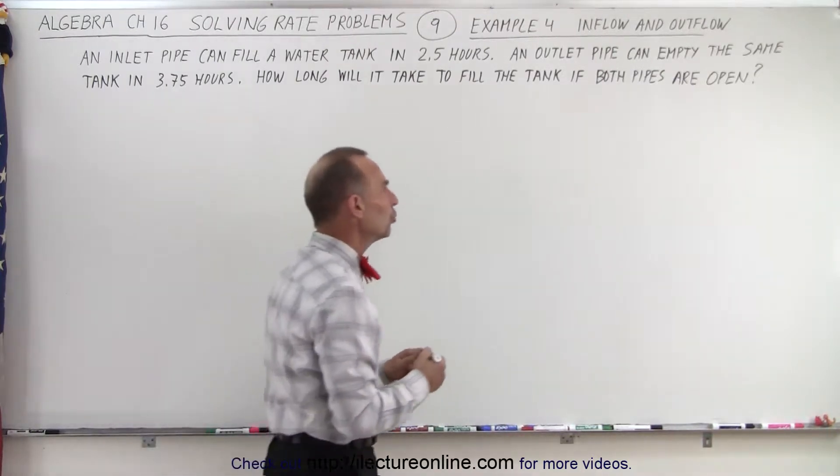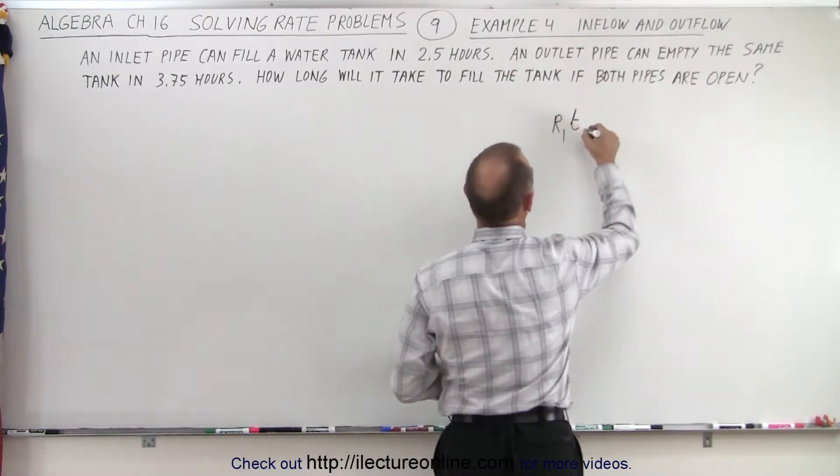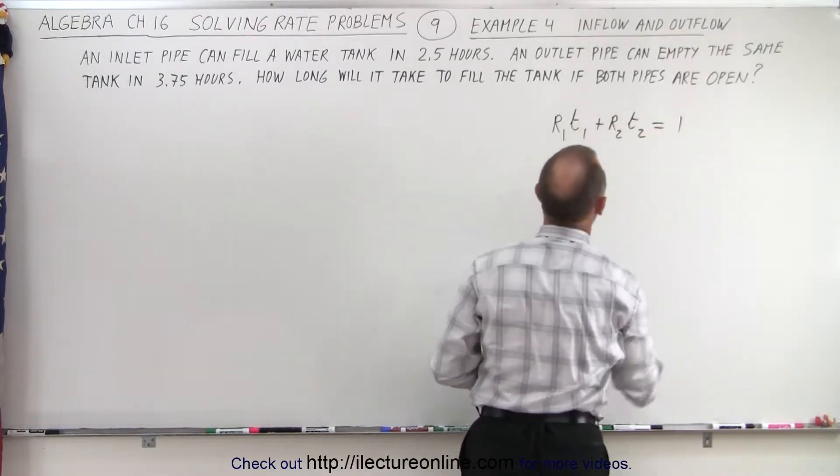The equation would normally read as follows: the rate of the first times the time of the first plus the rate of the second times the time of the second equals the whole job done.